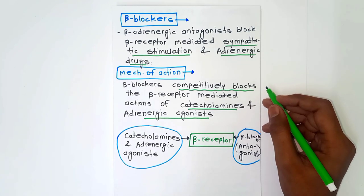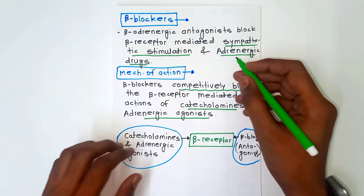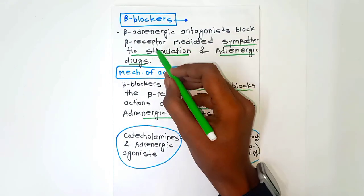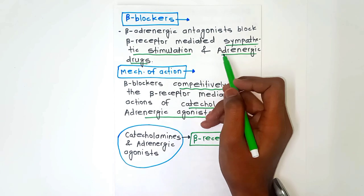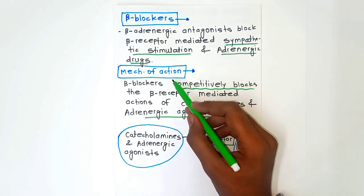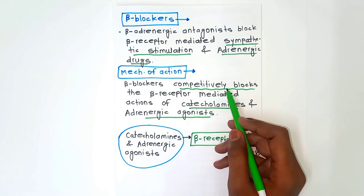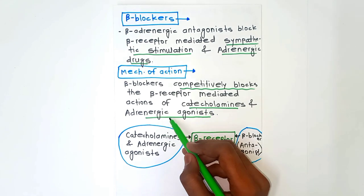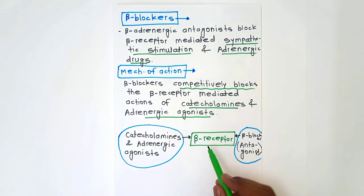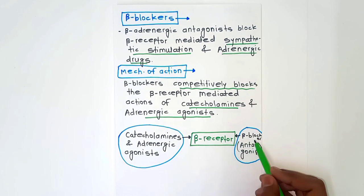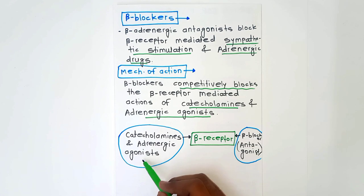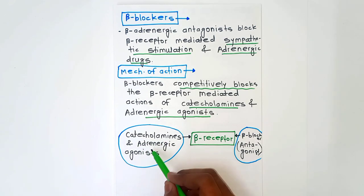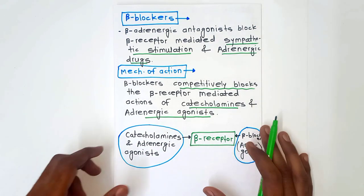So let's start. Beta blockers are beta adrenergic antagonists that block the beta receptor-mediated sympathetic stimulation and adrenergic drugs. Regarding the mechanism of action, beta blockers competitively block the beta receptor-mediated actions of catecholamines and adrenergic agonists. On the beta receptor, beta blockers act as antagonists while catecholamines and adrenergic agonists act as agonists.